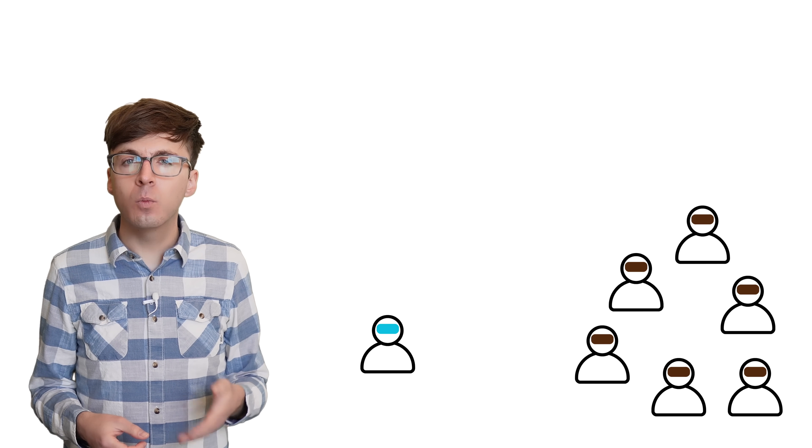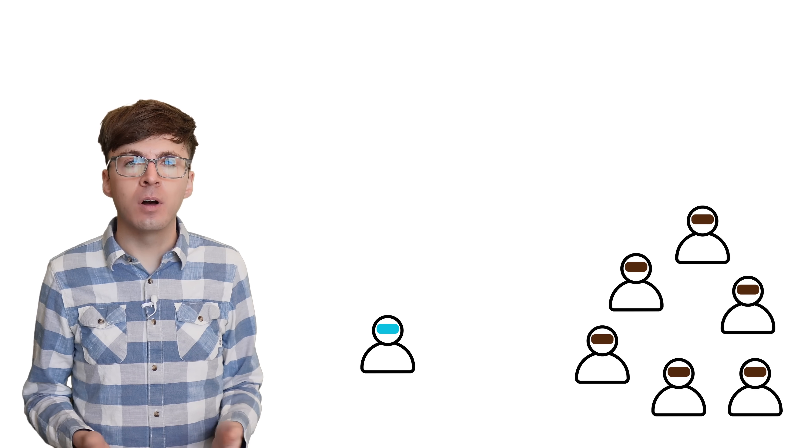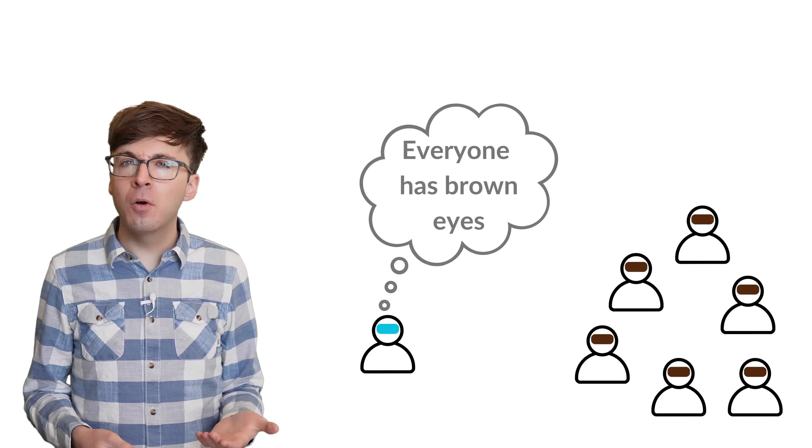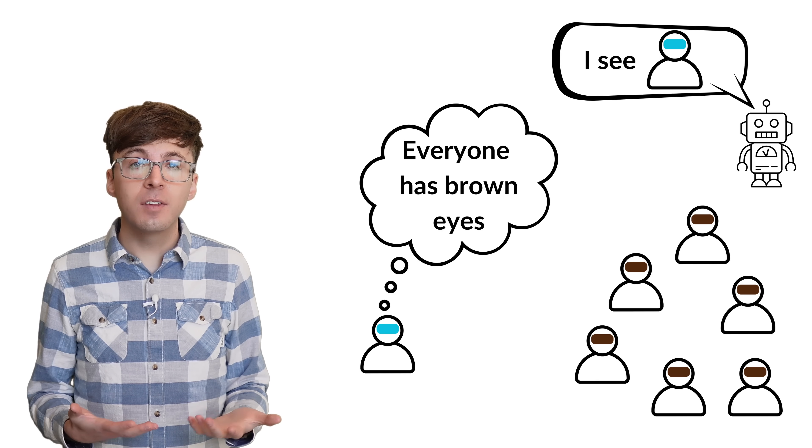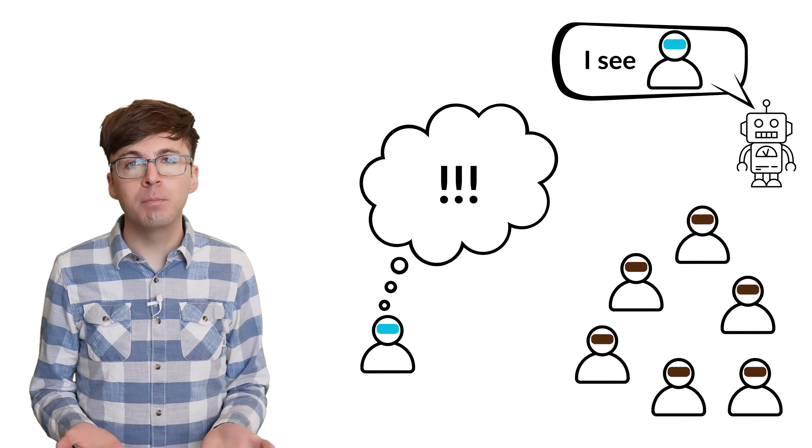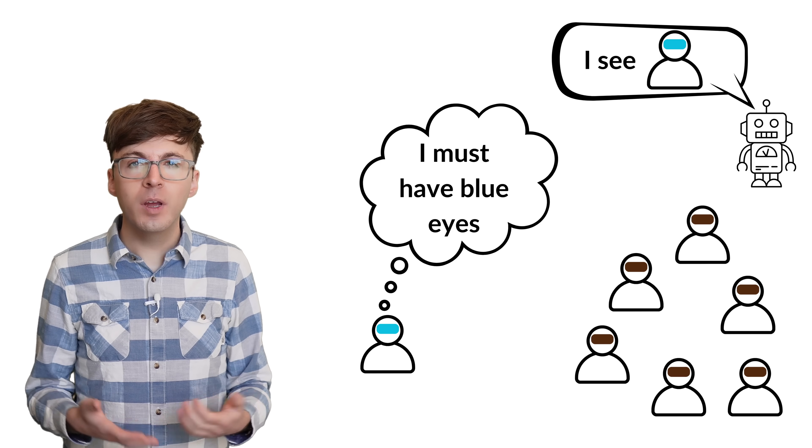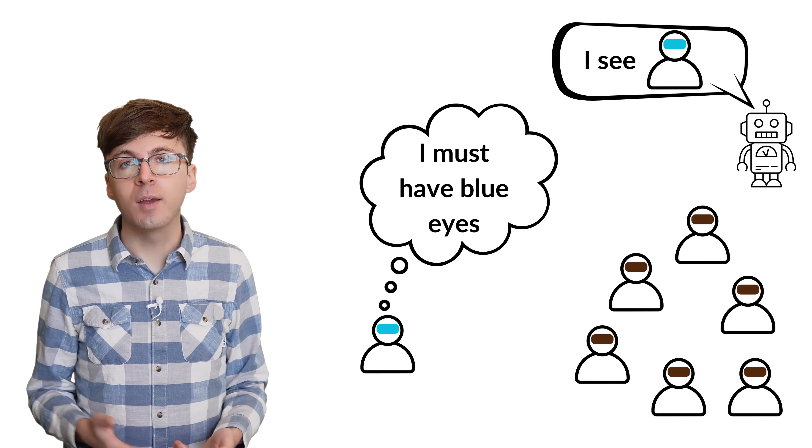Now let's solve the puzzle, starting with the smaller case where only one person has blue eyes. That person has only ever seen brown eyed people on the island. As far as they know, there are no blue eyed people on the island. So when the stranger says there's at least one blue eyed islander, they know that the stranger's statement must be about them. The blue eyed person realizes they have blue eyes, and they will leave at midnight on night one.